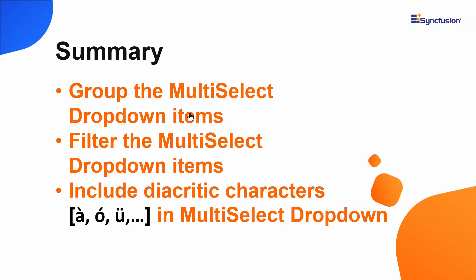Let me summarize the important points. We have seen how to group the Vue Multi-Select dropdown items and how to filter those items. We also covered the supported filter types and how to apply them, as well as how to handle diacritic characters while filtering. You can download the working example from the GitHub link in the description below. If you found this video useful, don't forget to click the like button and subscribe to our channel to watch more videos.